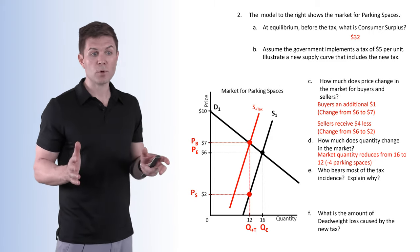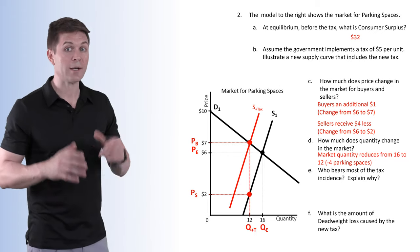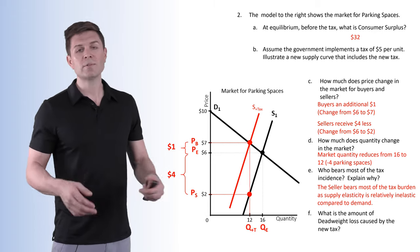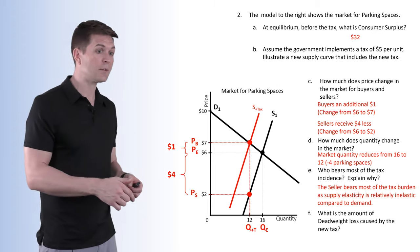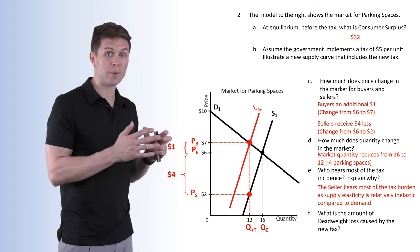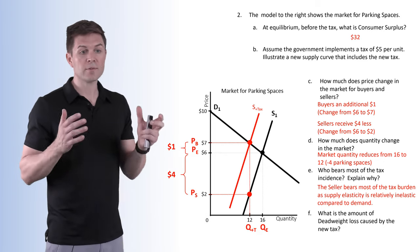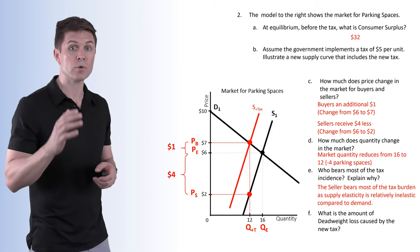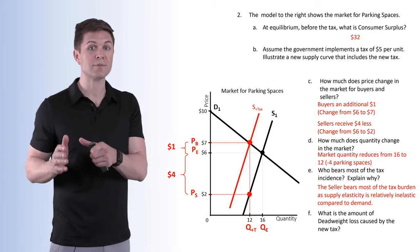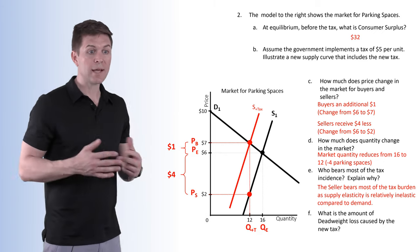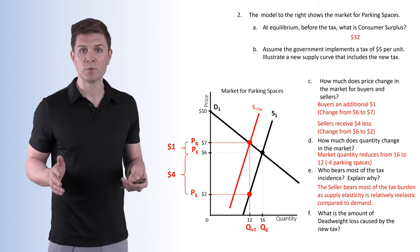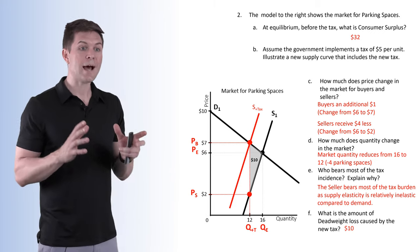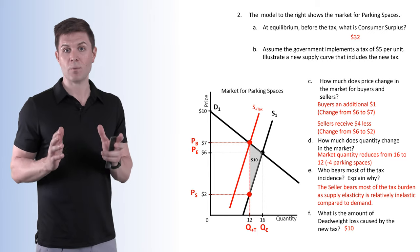Part E: who bears most of the tax incidence? It always has to do with elasticity. The buyer is paying $1 out of that $5 tax, and the seller is paying $4 of that $5 tax, so the seller bears most of the tax burden. Why? Because the supply curve is relatively inelastic — the party with the more inelastic curve bears the heavier burden. The deadweight loss caused by the new tax is $10 — that little triangle has an area of $10.